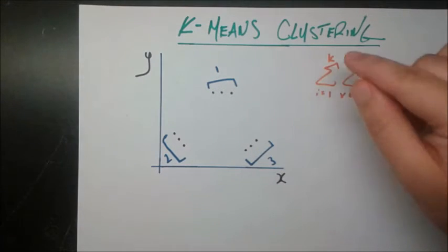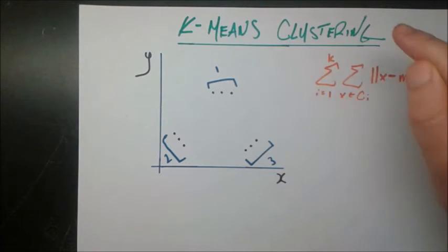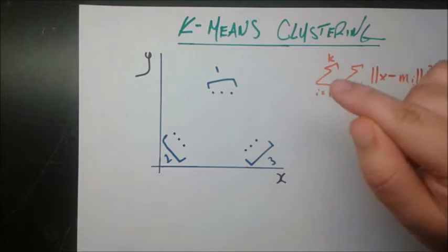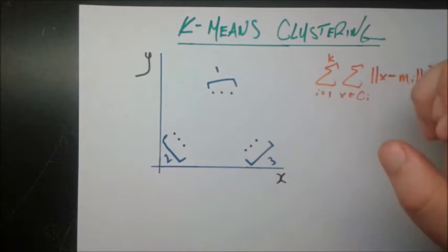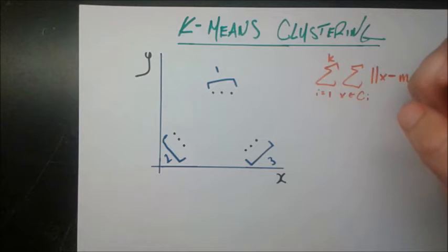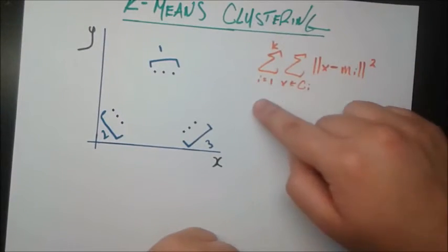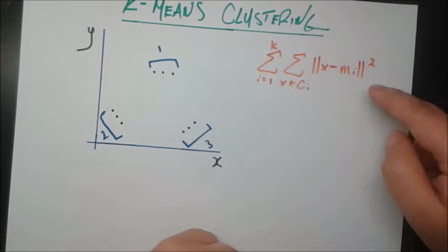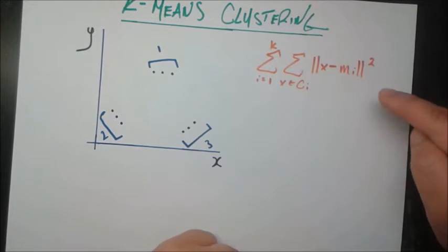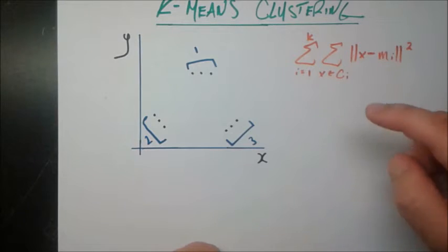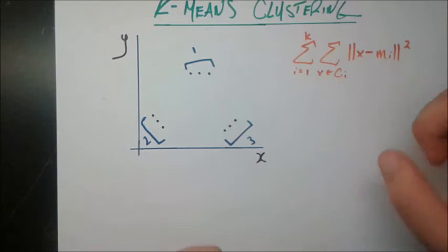It turns out k-means clustering does exactly that. It gives a very basic framework — and this is important to note — k-means is an introductory kind of clustering. It does work for a lot of high-level applications, but as we'll see, it does have its drawbacks. It uses this metric right here to determine what the clusters will end up being.